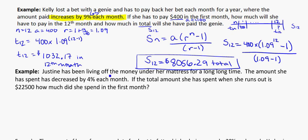Justine has been living off the money under her mattress for a long, long time. The amount she has spent has decreased by 4% each month. So decreasing by 4% each month, that tells me again it's going to be a geometric sequence. If the total amount she has spent when she runs out is this, how much did she spend in the first month? Well, the first month, that's actually asking for A.